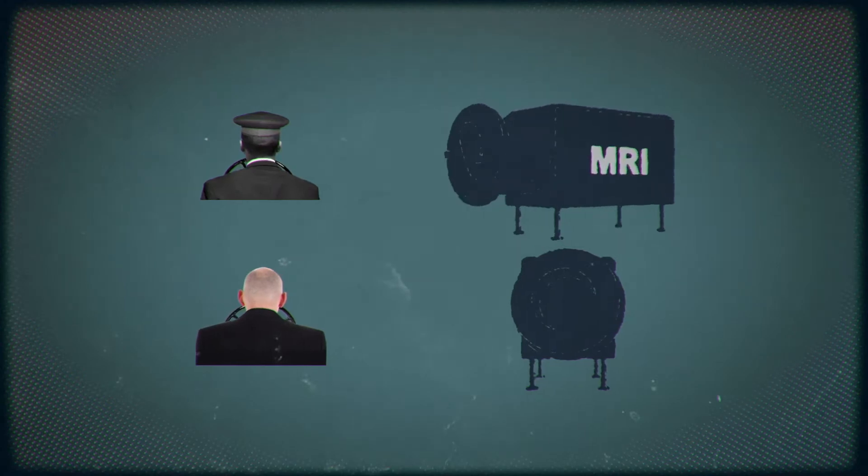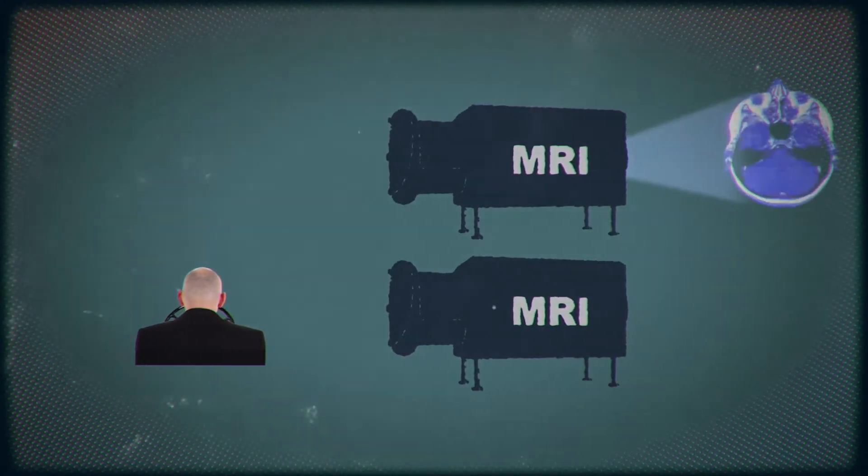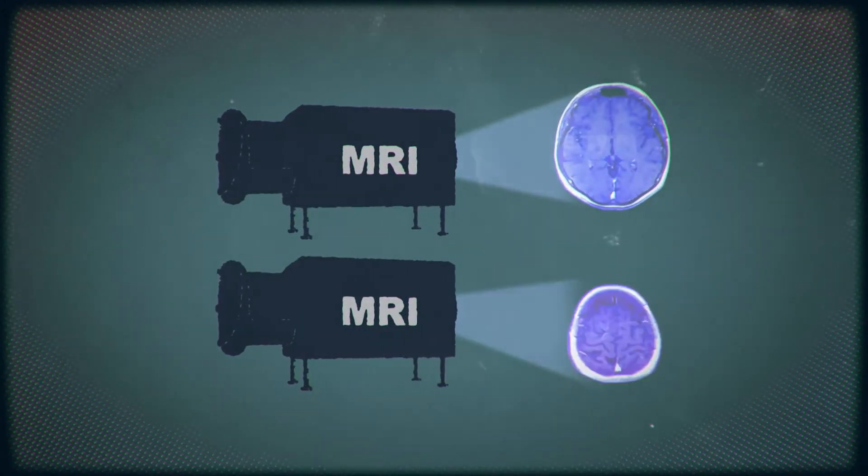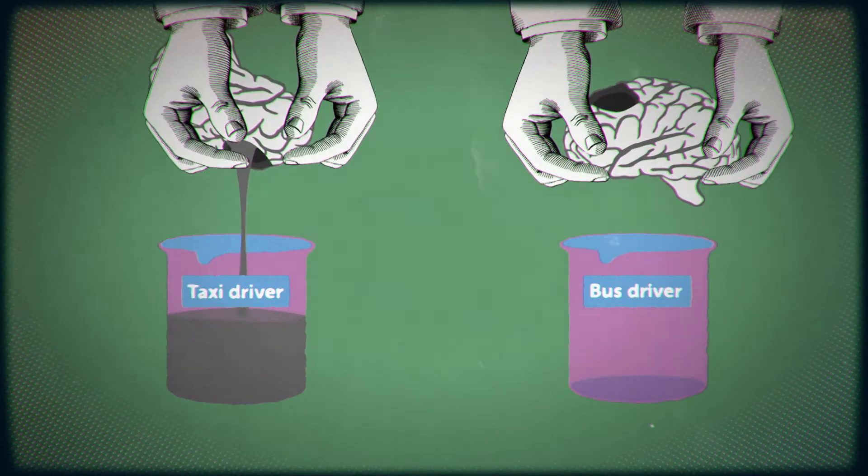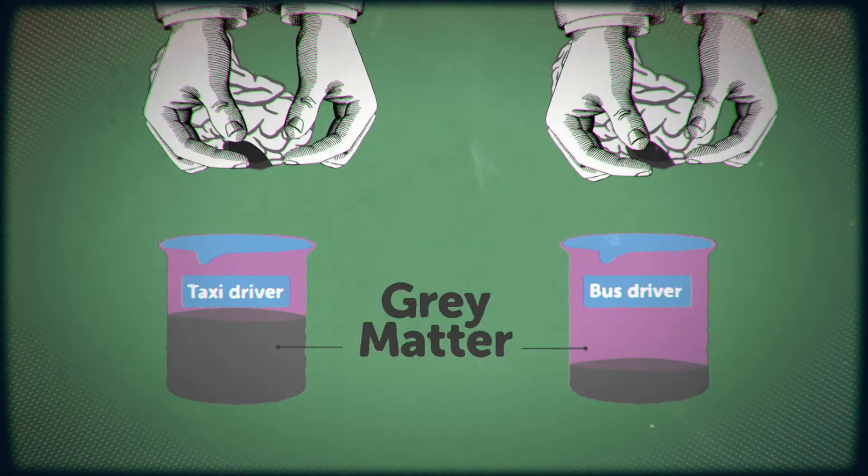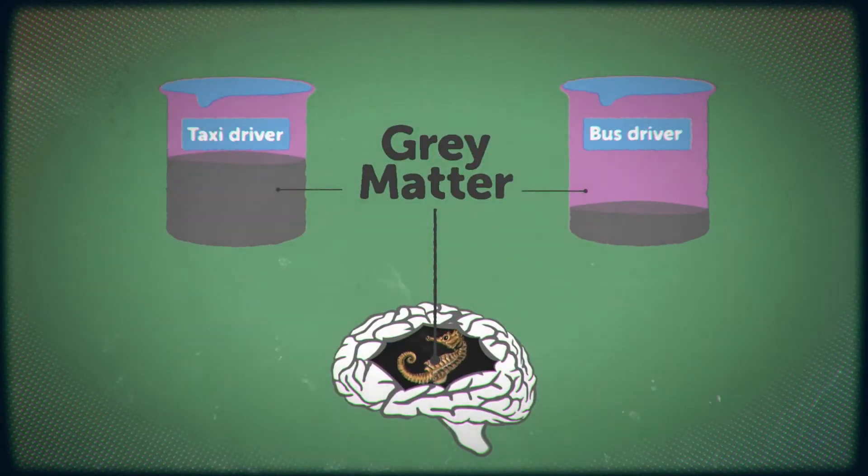The researchers took MRI scans of both bus and taxi drivers, but it was the cabbie's brain that showed something incredible. Their brains contained far more grey matter in the back part of the hippocampus than the bus drivers.